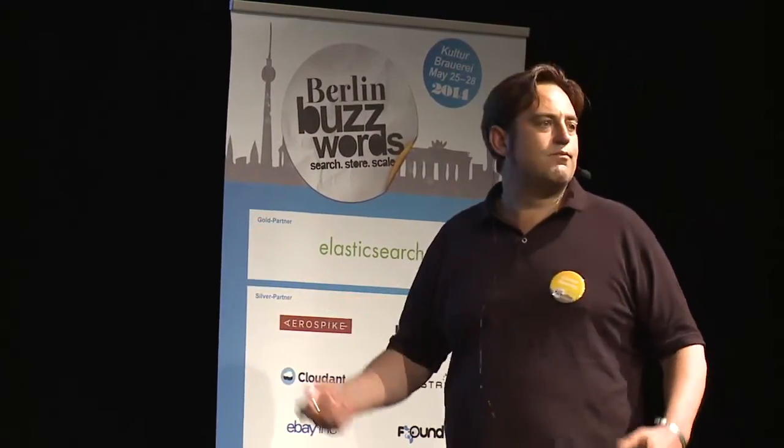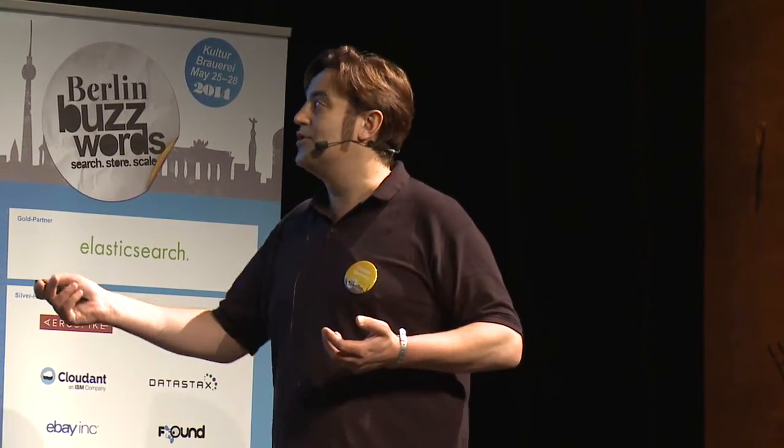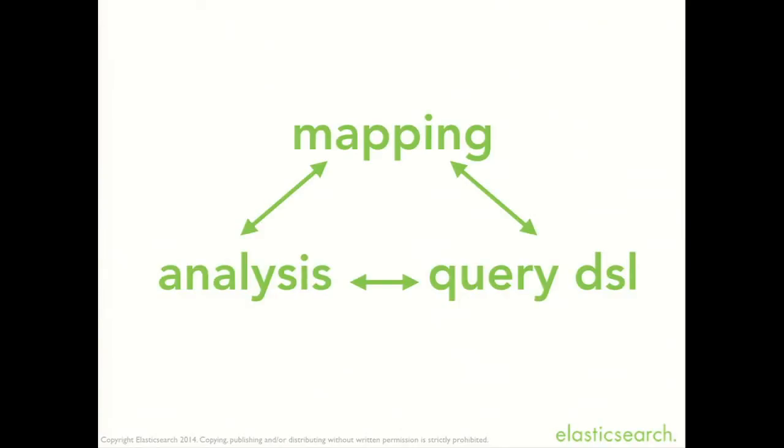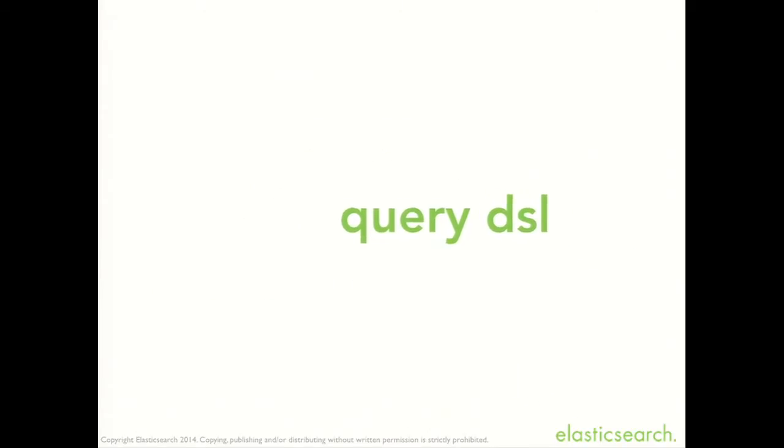The search part requires three chunks of functionality. The mapping, which is really how you define your fields — is this an integer, is it a date, is it a geolocation, is it a string? If it's a string, is this an exact value string like a status code, or is it a full text string? If it's a full text string, you want to analyze it before you index it to make it more searchable. The mapping and analysis parts are talks in their own right — they can be very complex — but we're going to start with some simple analysis and focus on just the query DSL.